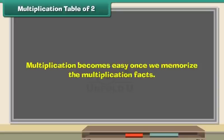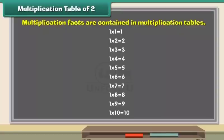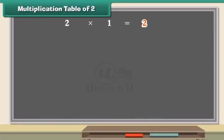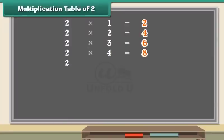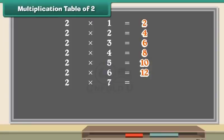Multiplication becomes easy once we memorize the multiplication facts, which are contained in multiplication tables. Let us start with the multiplication table of 2. 2 ones are 2, 2 twos are 4, 2 threes are 6, 2 fours are 8, 2 fives are 10, 2 sixes are 12, 2 sevens are 14, 2 eights are 16, 2 nines are 18.